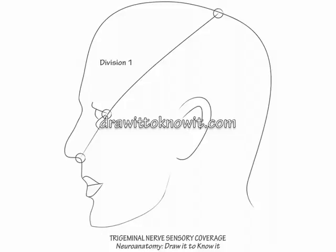Next, mark a dot at the same superior posterior point, then at the maxilla, and then the corner of the mouth. Join these dots and label the region between this line and division 1 as division 2, the maxillary division.